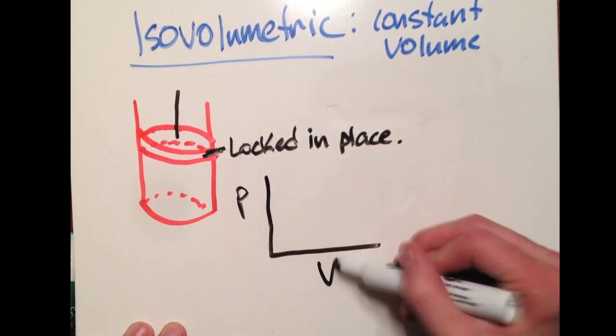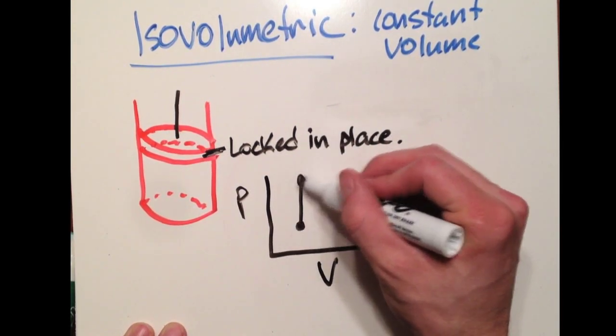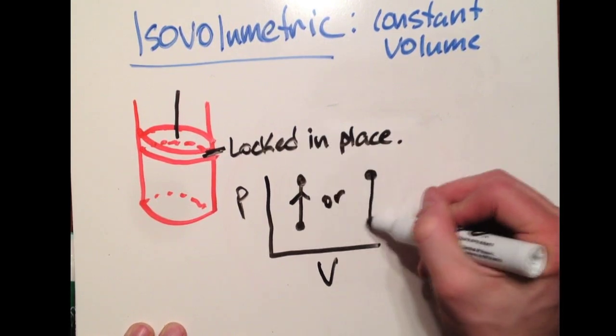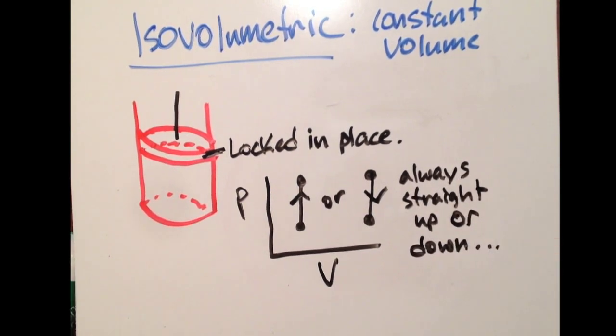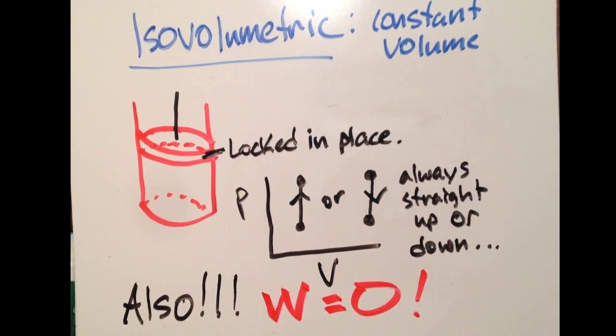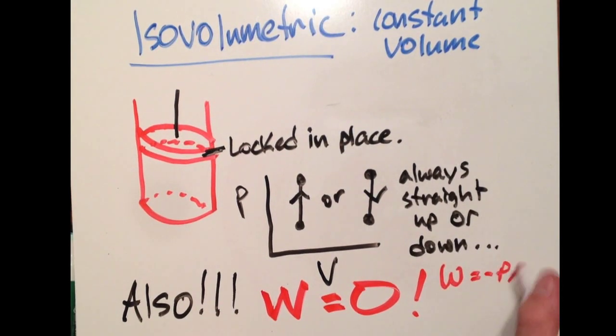Whether I add heat and I cause that gas to expand, increasing the pressure, or whether I decrease the pressure, the volume is still not going to change. It will always be straight up or straight down on your PV diagram. Also, with an isovolumetric process, the work done is zero because there is no change in volume.